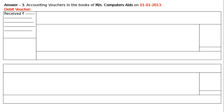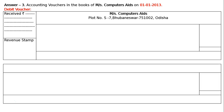In the next box below this is the revenue stamp. In the next column, top column, we will have to write down the name of the shop — Messers Computer Aids. Plot number is 7, Ruben Eswar. The pin number is 751002, Odisha. On the left side we will have voucher number 1.